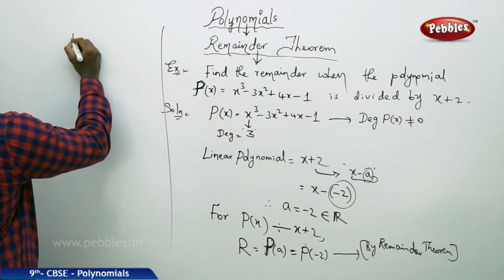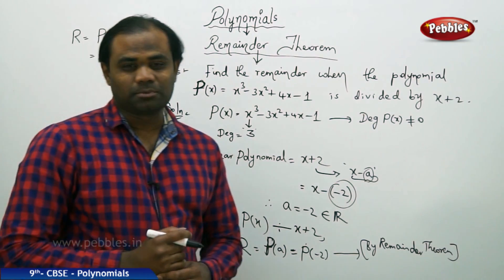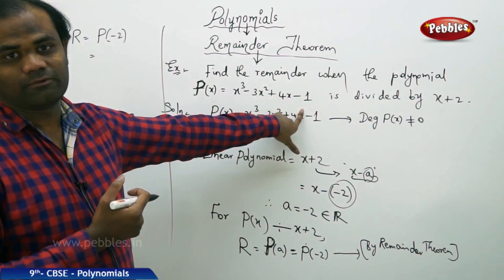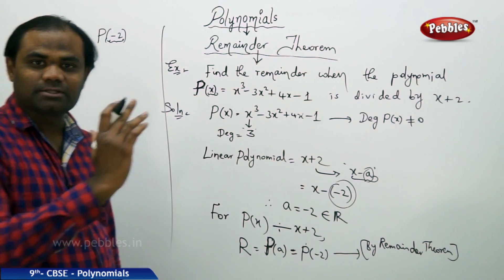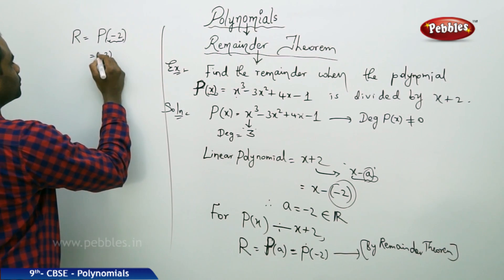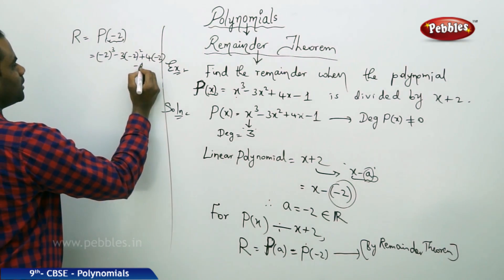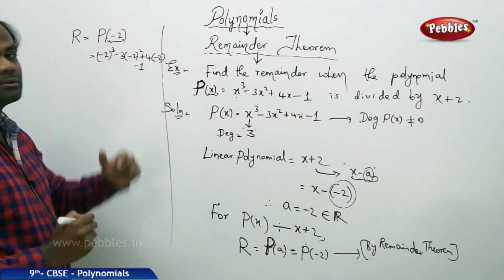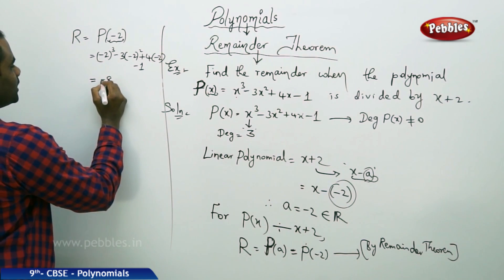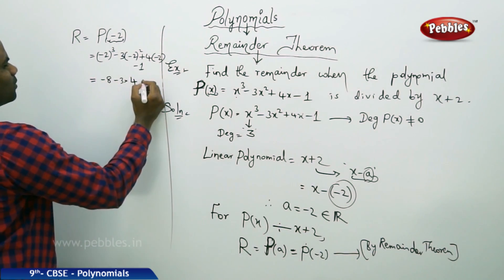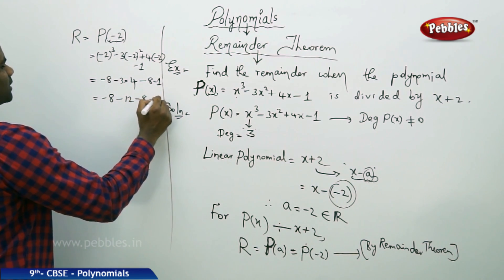So let's evaluate p(minus 2). The remainder p(minus 2) is the value obtained by substituting x equal to minus 2 in the given polynomial p(x). When x is replaced with minus 2, we get: (minus 2)³ minus 3(minus 2)² plus 4(minus 2) minus 1. Simplifying: minus 8, minus 3 times 4, minus 8, minus 1, which gives minus 8, minus 12, minus 8, minus 1.